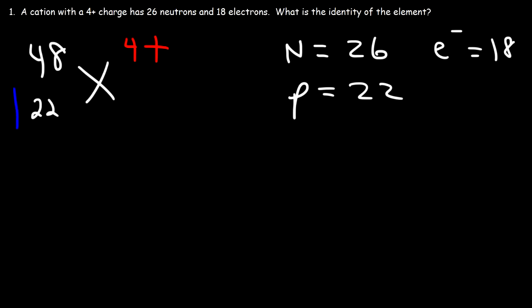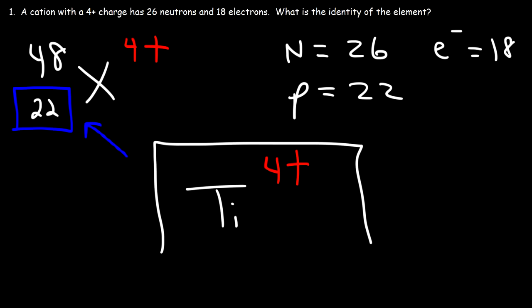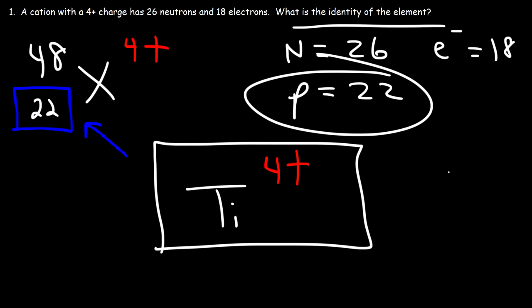If you go to the periodic table and look for element 22, you'll find that this corresponds to titanium. So this is the titanium 4+ ion, and titanium is the unknown element. Once you identify the number of protons, you can use a periodic table to identify any missing element in these types of problems.